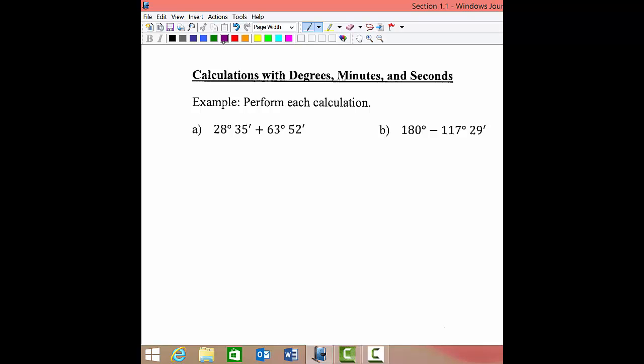Here we have two angles that we're adding together: 28 degrees 35 minutes plus 63 degrees and 52 minutes. Let's write it vertically, 28 degrees 35 minutes, lining up the degrees and the minutes, and we're asked to add these together. So how many minutes? We're going to add within the categories. How many minutes do we have?